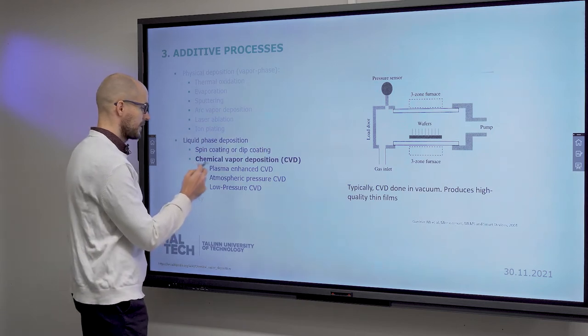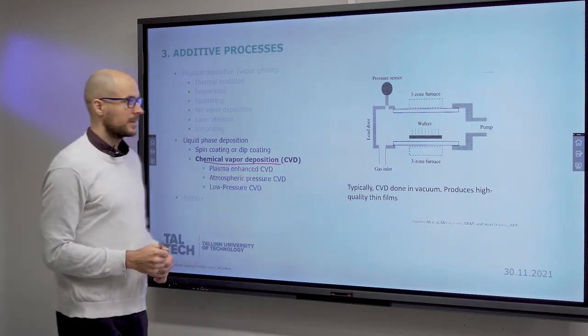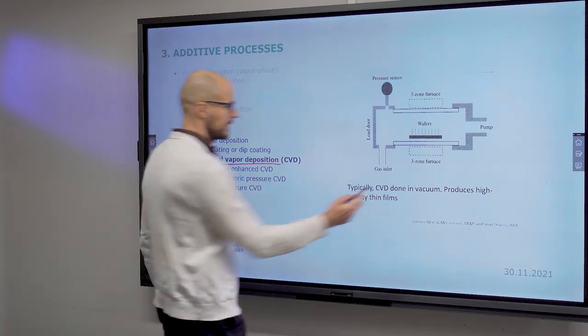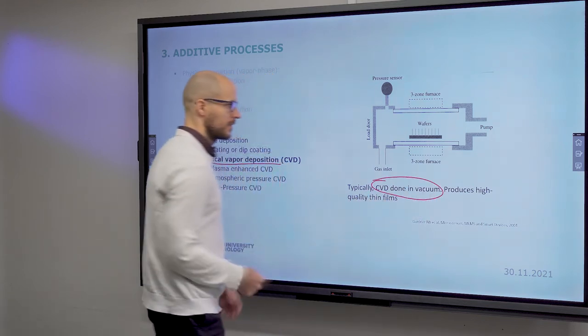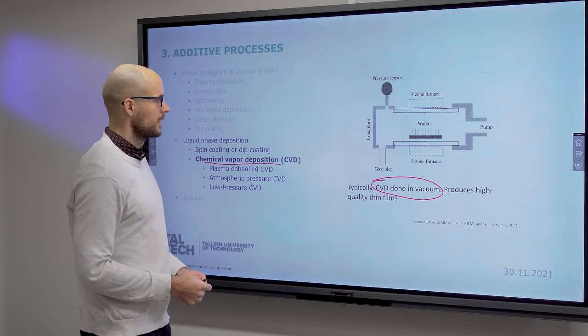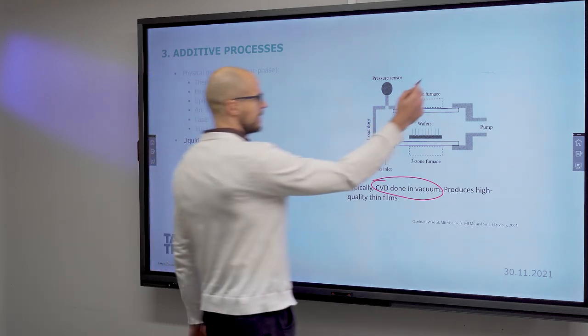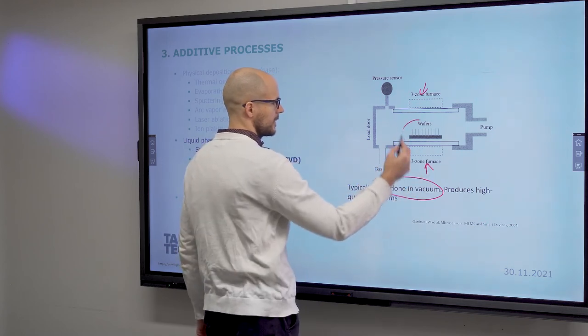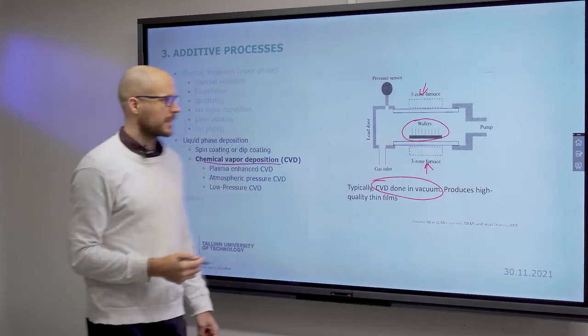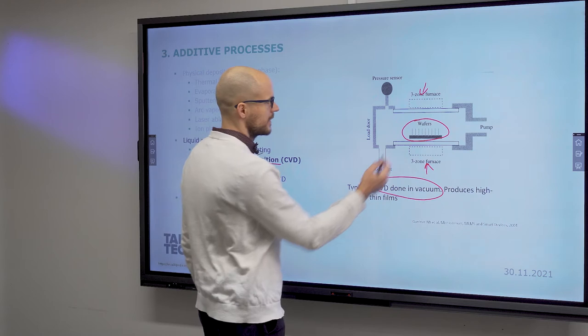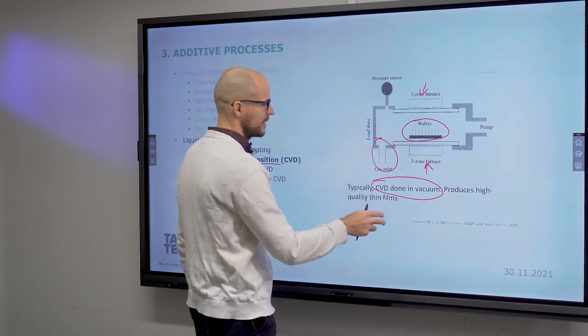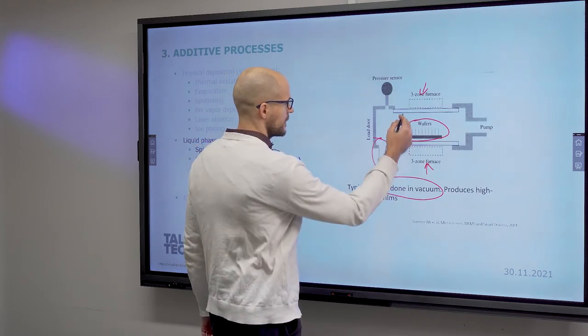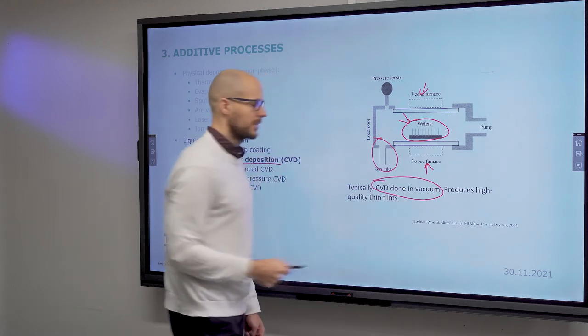Chemical vapor deposition is another method. It is typically done in vacuum and produces high quality thin films. The wafers are placed inside this vacuum chamber where you feed your material, and it is deposited onto these wafers.